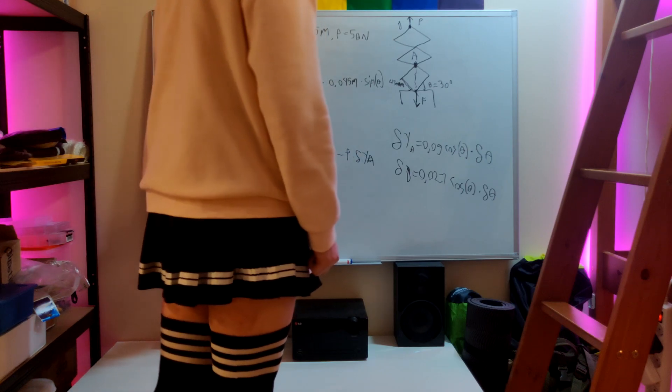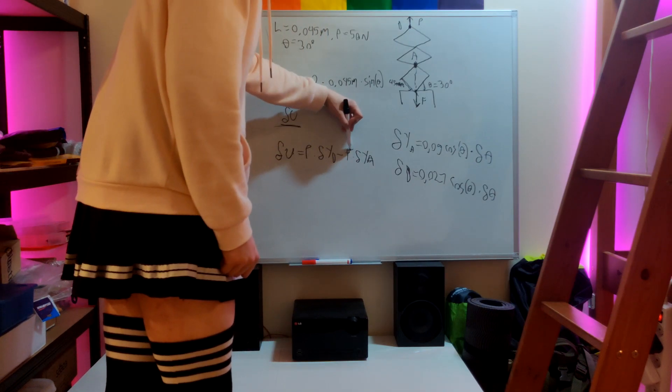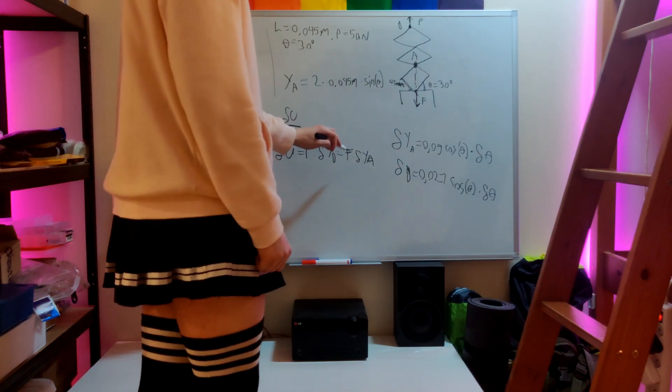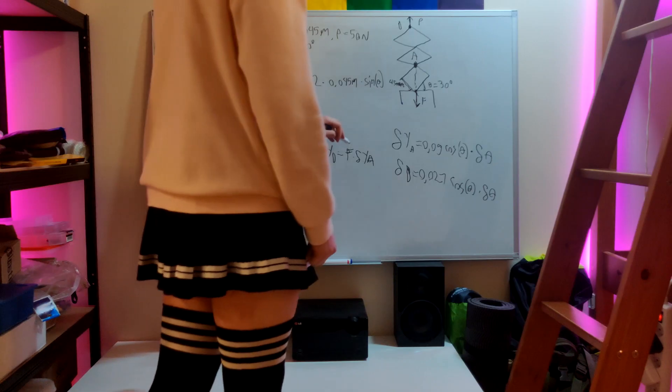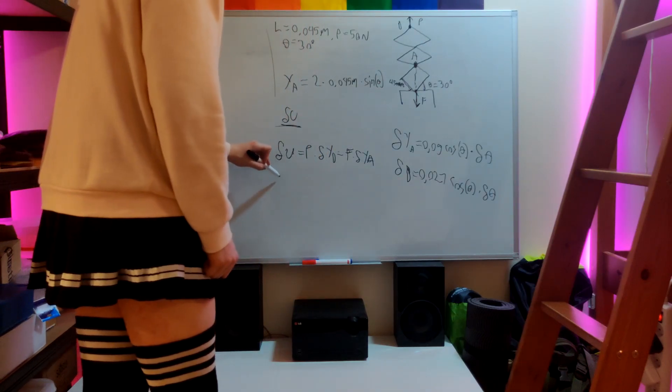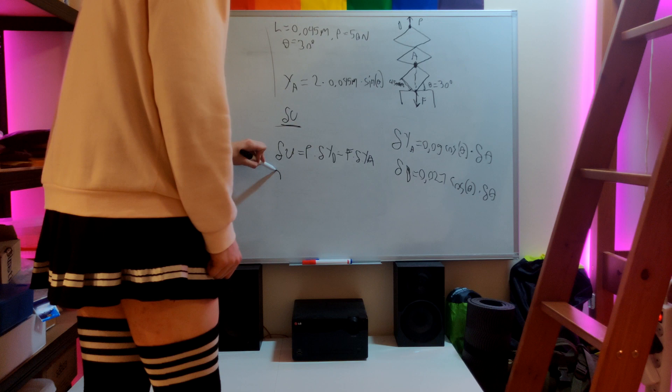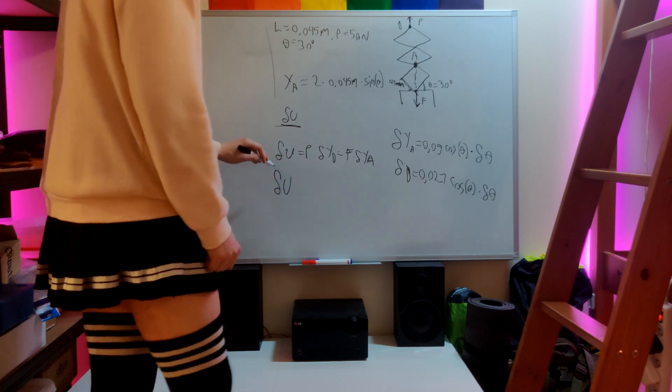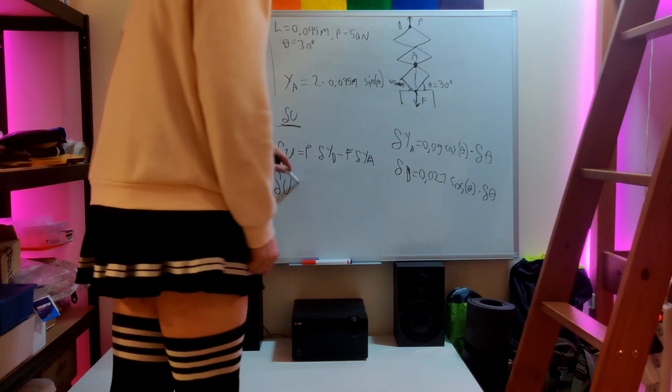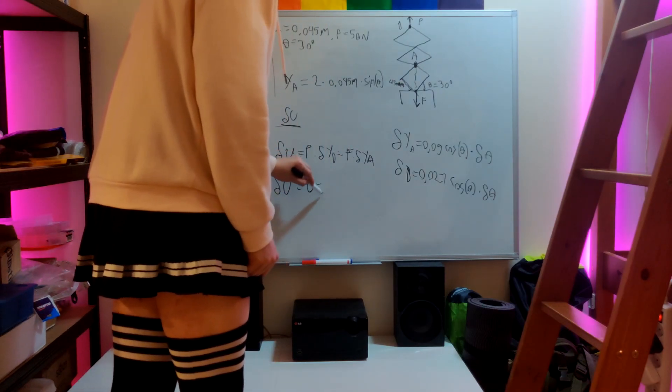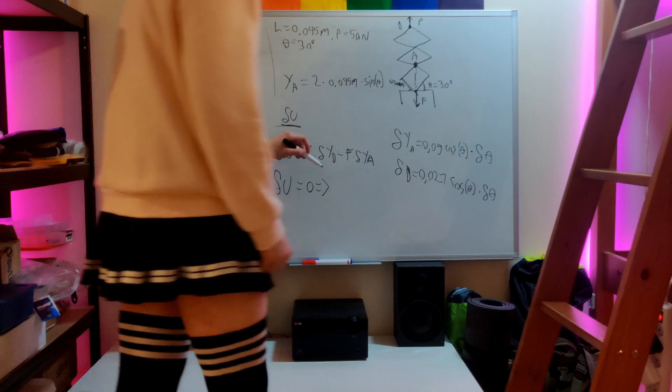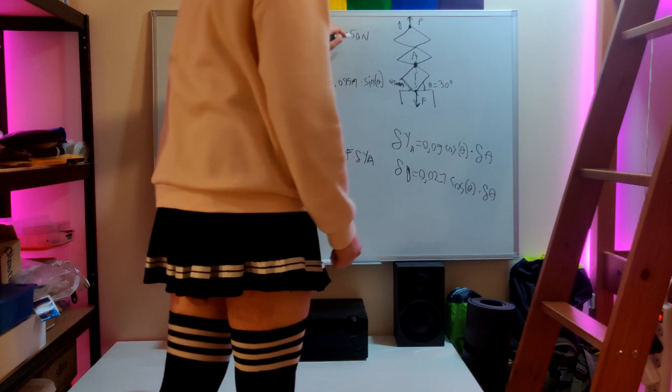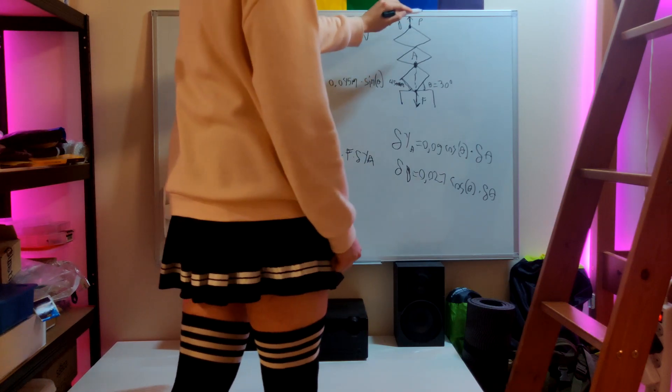So basically this means that we can solve for this unknown, which is F, by writing it like this. The infinitely small change is zero, which leads to 50, which comes from right here. We pull it up with 50 newtons.